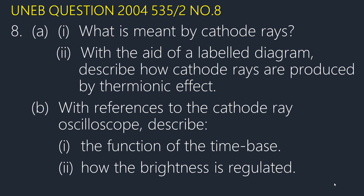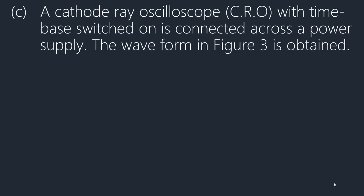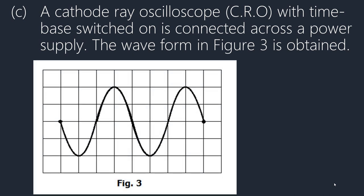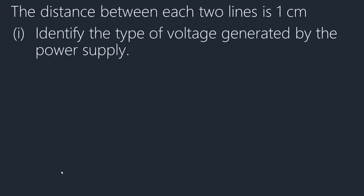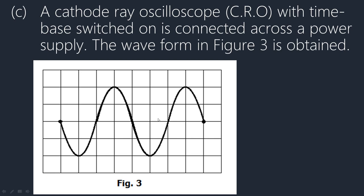When you make the control grid less negative, more electrons can pass through it; if you make it more negative, fewer electrons pass through. Now, a CRO with the time base switched on is connected across a power supply and the waveform in figure three is obtained. We are told the distance between each two grid lines is one centimeter. Roman 1: identify the type of voltage generated — because we have a waveform, this shows it is an alternating voltage or AC voltage.